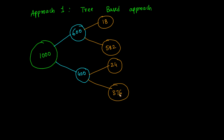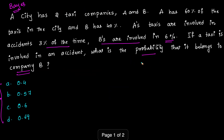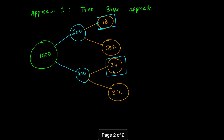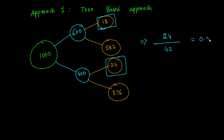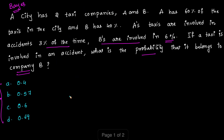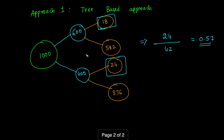Looking at the overall tree diagram, 18 cars from company A and 24 cars from company B have been involved in an accident, giving a total of 42. The question asks for the probability it belongs to company B, so that is 24 out of 42, which gives a probability of 0.57. So option B is correct.